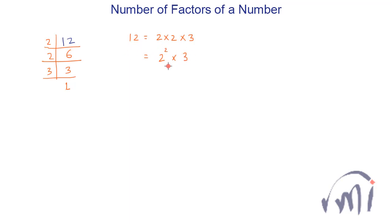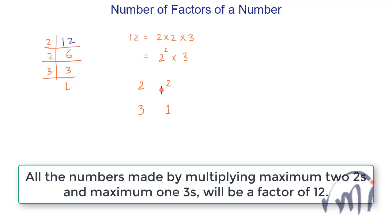So this is the representation of 12 in terms of its prime factors. In the list of prime factors of 12 we have 2 and 3. There are total two 2's and only one 3. When writing all the factors of 12 you have choices: you can take zero 2's and zero 3's, giving 2⁰ × 3⁰ = 1, which is a factor. Then you can take one 2 and zero 3's: 2¹ × 3⁰ = 2, also a factor.